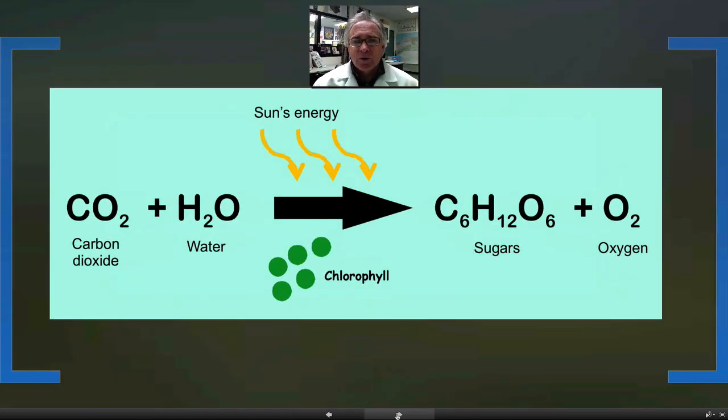If we take a look at the equation, it's relatively simplistic but has a lot of meaning for life on this planet and the agricultural industry. In agriculture, we try to maximize photosynthesis because it increases yields and products. A basic understanding is really important from the perspective of being in an agricultural classroom.